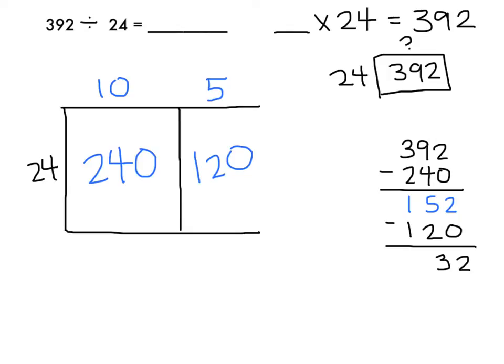So next I need to think about if I have 32 remaining, how many groups of 24 can I get into 32? I can only get one more group of 24 into that, and 1 times 24 is 24. Here's where I need to close off my rectangle, and I'm going to subtract 24 from my 32, and I'm left with 8.